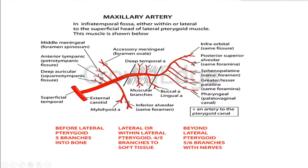The second part of the maxillary artery gives all muscular branches — these are the muscles of mastication. The muscles of mastication are supplied by the maxillary artery and the mandibular nerve. There is no such thing as a mandibular artery; there is only the maxillary artery and mandibular nerve in that area. The maxillary artery is very large, but the maxillary nerve is a small, limited supply. These are the branches that the second part of the maxillary artery gives.